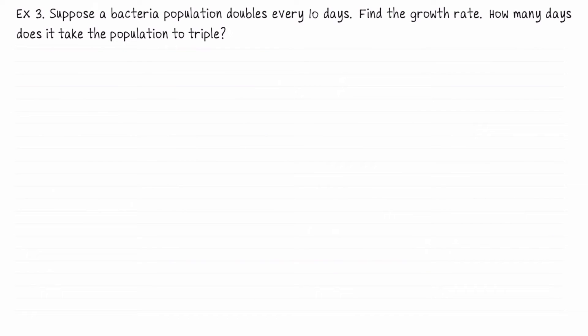Let's finish with this example. Suppose a bacteria population doubles every 10 days. Find the growth rate — that is, the parameter r. Also, how many days does it take the population to triple? In this problem we don't have an initial condition; we're not told the population at any specific time.